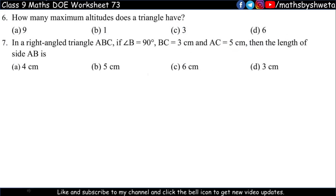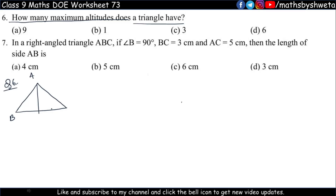Question number 6: How many maximum altitudes does a triangle have? Altitudes are different from medians. For median, the opposite side is divided at the midpoint, so BD equals DC. But for altitude, it is not necessarily the midpoint. From each vertex of a triangle, I can draw one altitude. So a triangle has three altitudes.